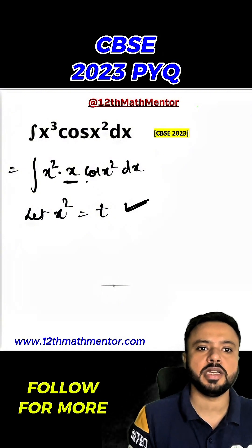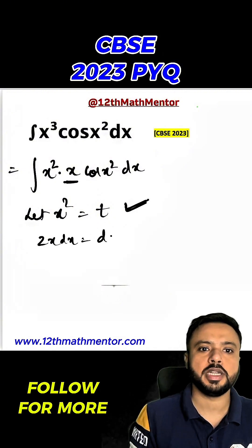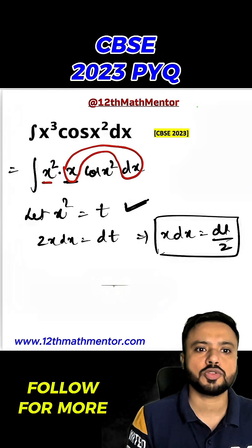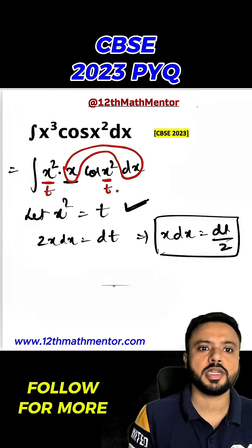So this x can be replaced with dt. That means 2x dx will equal dt. That means x dx will equal dt upon 2. This x dx we can replace completely with dt upon 2. From x² to t, and here x², we can replace it as well.